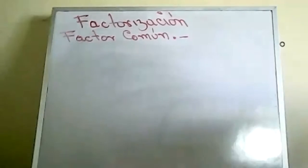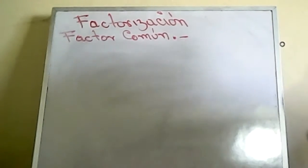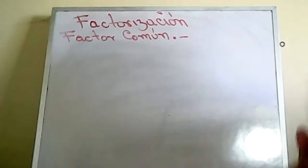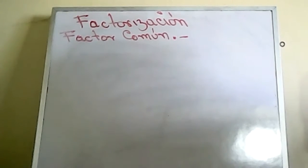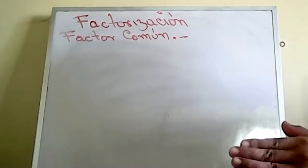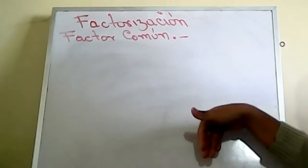Factor común. ¿Qué se les viene a la mente a ustedes cuando digo factor común? Van a tener algo en común, algo repetitivo. Algo que se repita, algo con el mismo valor, la misma variable, o van a tener la misma variable con exponente de forma ascendente o descendente. Igual ocurrirá con los coeficientes numéricos.